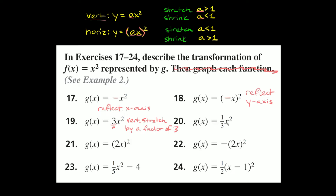Problem 20: g of x equals one-third x squared. No parentheses, so it's vertical. The number one-third is smaller than 1, so that means it's a vertical shrink by a factor of one-third. For vertical stretch or shrink, whatever your a number is, that's the factor. So here it's a factor of 3 for the stretch, and a factor of one-third for the shrink.